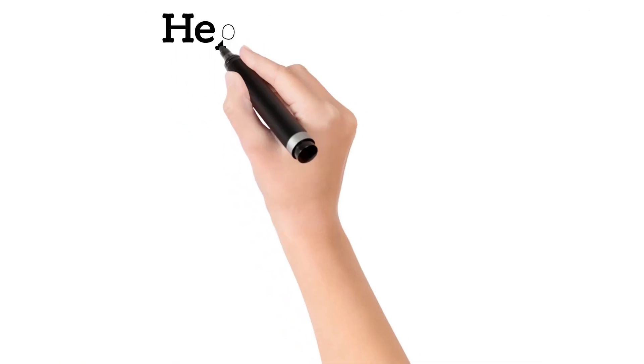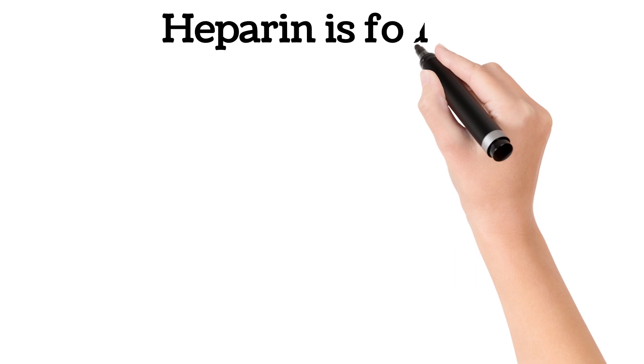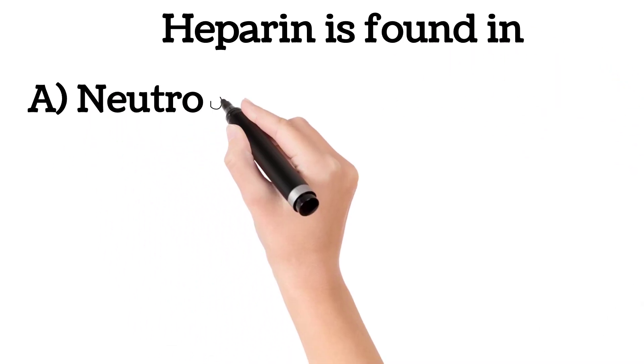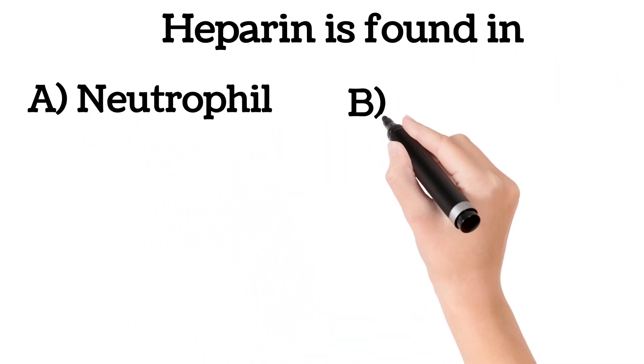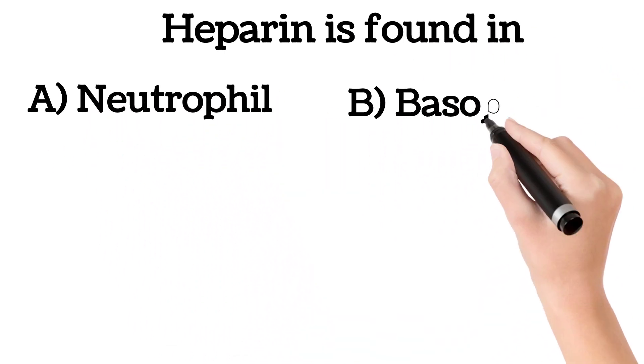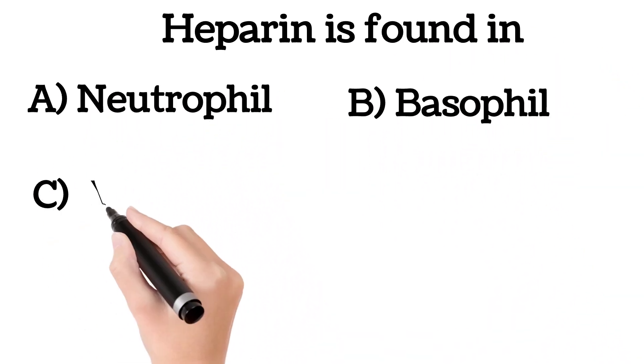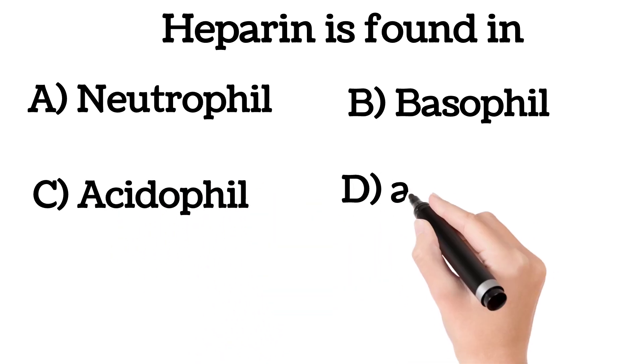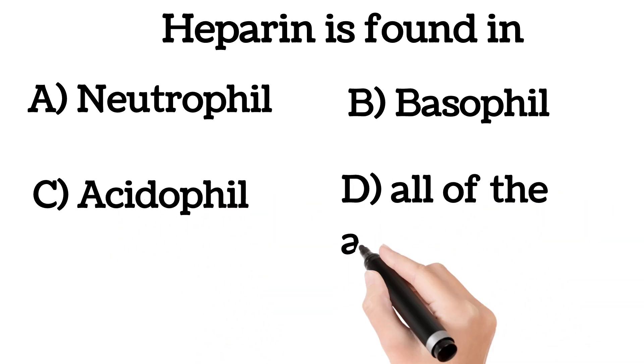Heparin is found in: A. Neutrophil, B. Basophil, C. Acidophil, D. All of the above.